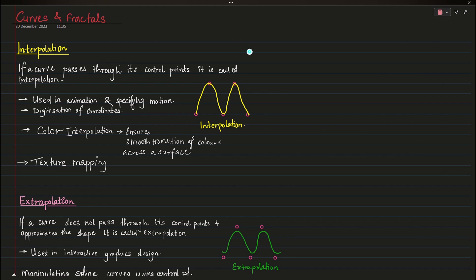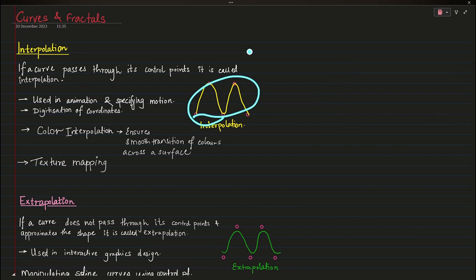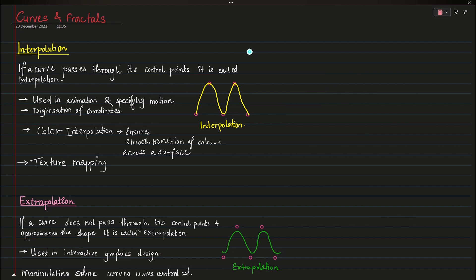Let's start now. Curves and fractals — first we'll take a look at curves. What are curves? Basically anything which is not a straight line. Drawing curves takes a lot of effort, so how do we draw them? We basically take a set of points and try to draw a curve through those points. If a curve passes through its control points, it is called interpolation.